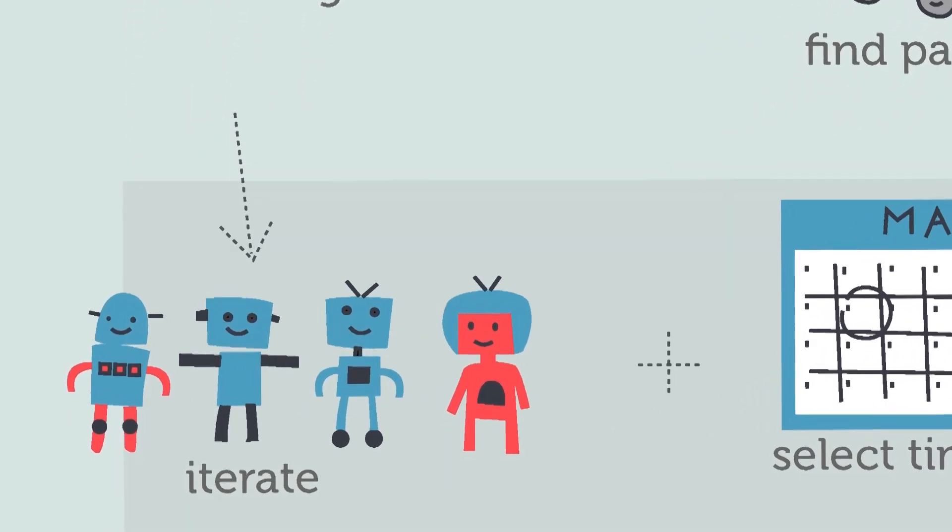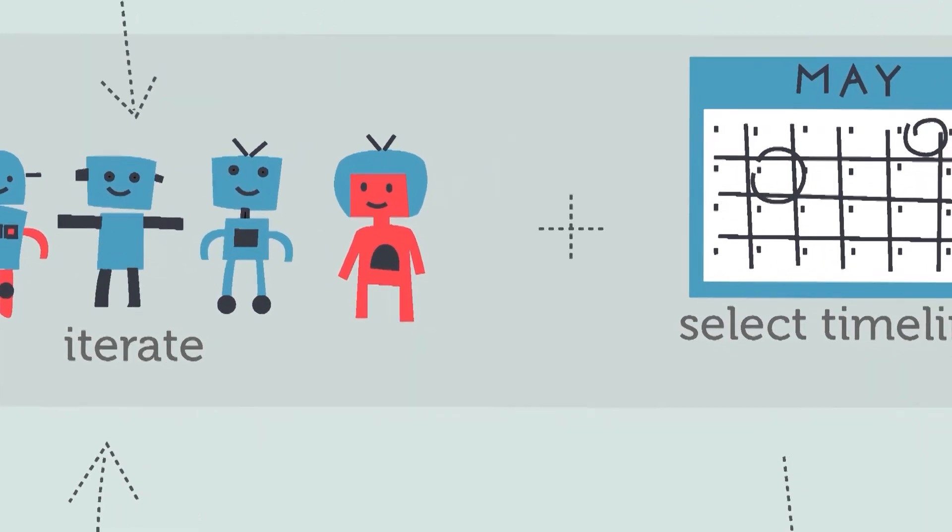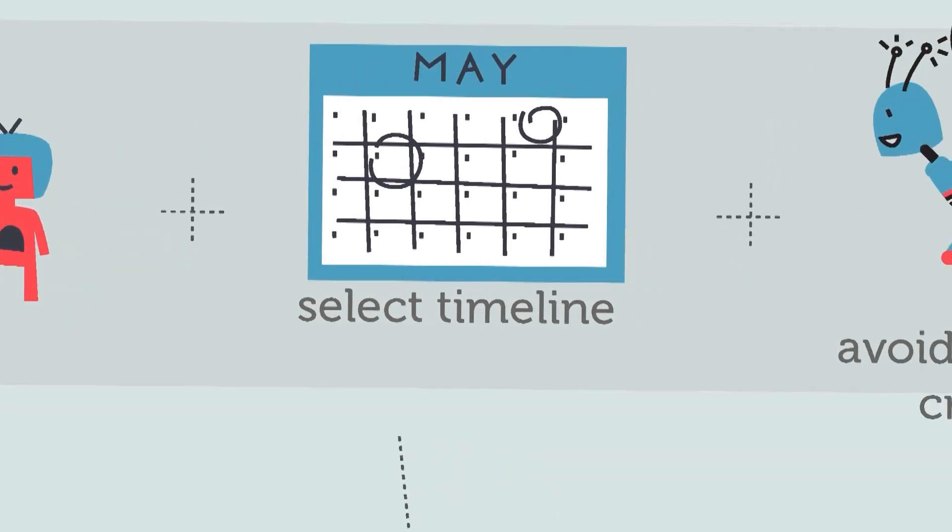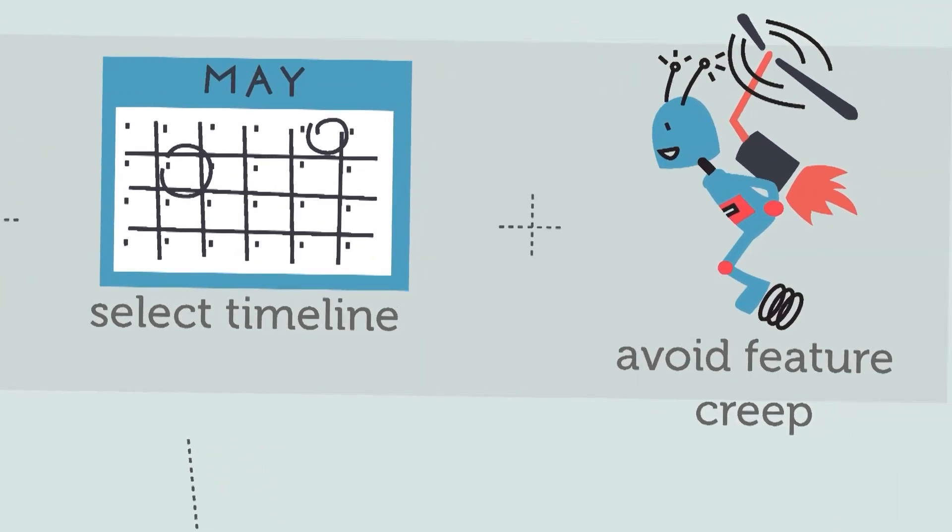The next step is kind of three phases. It involves iterating on your design, selecting a timeline so you stay on schedule, and avoiding feature creep.